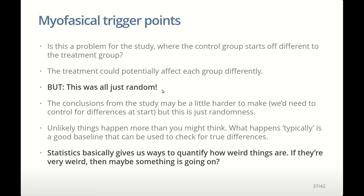Is this a problem for the study? Potentially, because the groups are starting off at different numbers of trigger points, and so any difference seen at the end could just be due to the groups being different at the start rather than being due to our intervention. But this was purely due to randomness — the vet had no knowledge of which group each dog was in, and it just happens to be how the random allocation fell out. Weird things happen by chance. Nonetheless, our analysis will control for the number of trigger points each dog had at the start, which we would probably do anyway given there's likely a per-dog effect.